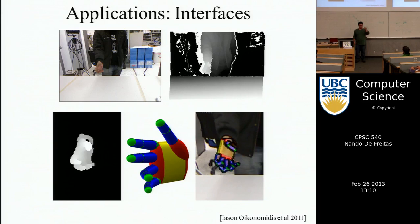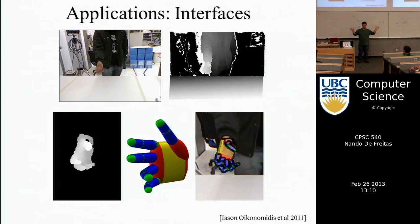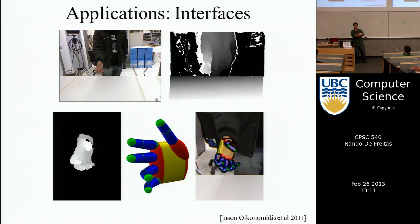In random forests, you just average the trees at the end — they're completely independent, trained in parallel. In boosting, the individual classifiers are simpler — usually stumps — but you fit them in sequence: you fit one, look at the errors it makes, re-weight your data, fit another one, and keep going until you have a weighted combination of classifiers each trained on weighted combinations of data. Where exactly to draw the line between being clever about the individual classifiers versus the ensemble is something nobody really has a good answer for other than cross-validation.